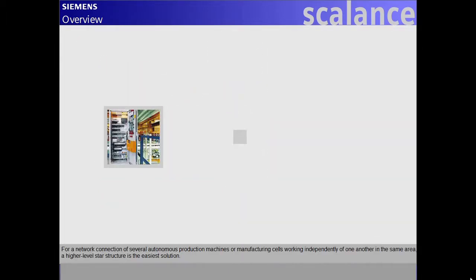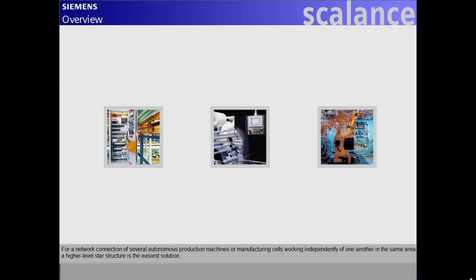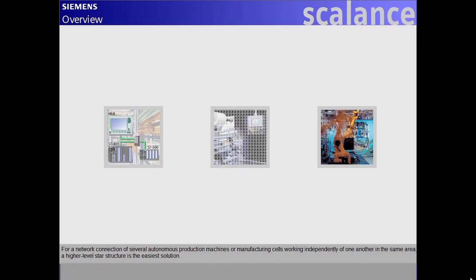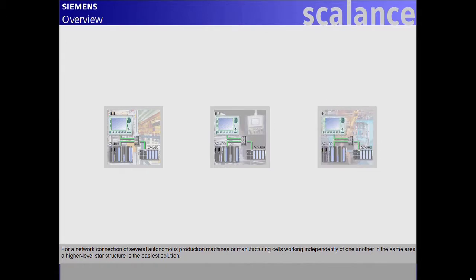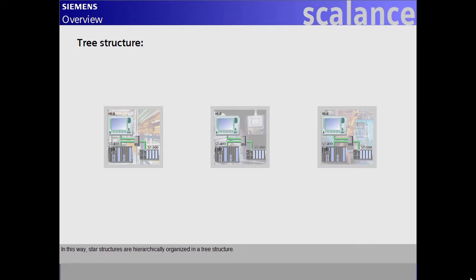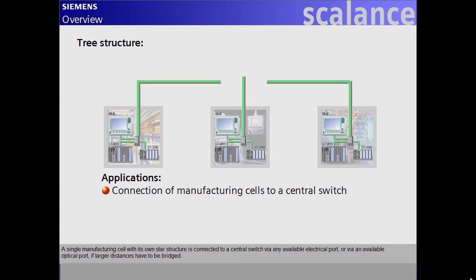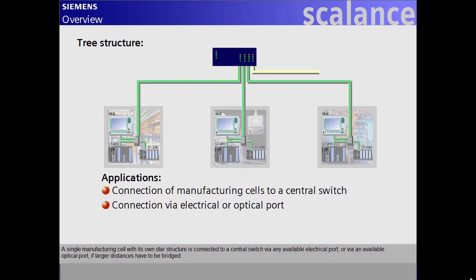For a network connection of several autonomous production machines or manufacturing cells working independently of one another in the same area, a higher level star structure is the easiest solution. In this way, star structures are hierarchically organized in a tree structure. A single manufacturing cell with its own star structure is connected to a central switch via any available electrical port, or via an available optical port if larger distances have to be bridged.